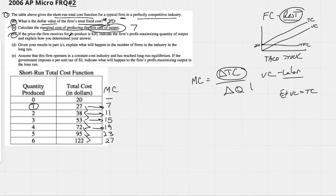Calculate the marginal cost of the first unit of output. Easy enough. Here's our first unit of output. It is seven. So $20 here. Let's don't forget to answer them. Seven there. If the price the firm receives for its product is $20, indicate the firm's profit maximizing quantity of output and explain how you determine that answer.